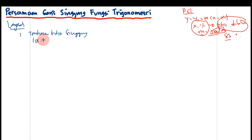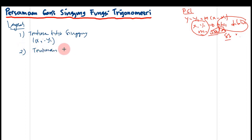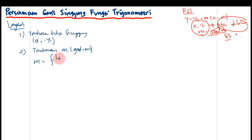Titik singgung yaitu X1, Y1. Kemudian langkah yang kedua, kita tentukan gradien dari garis singgung tersebut — gradien M. M itu adalah turunan pertama di absis dari titik singgungnya. Jadi turunkan satu kali fungsinya, lalu substitusikan absis dari titik singgungnya, yaitu X-nya.